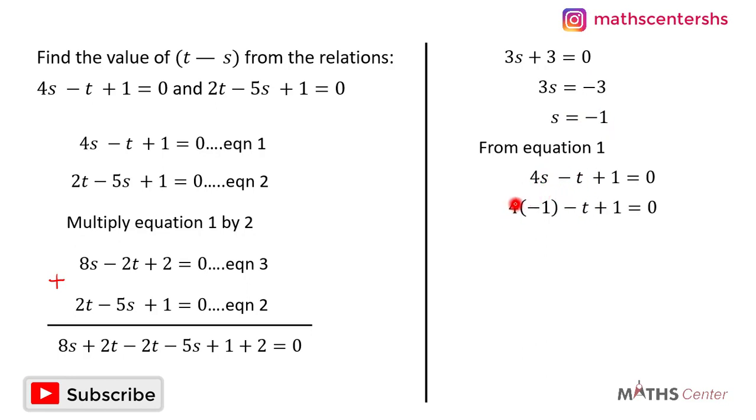That will give us 4 times negative 1 minus t plus 1 equals zero. 4 times negative 1 will give us negative 4. So negative 4 minus t plus 1 equals zero.